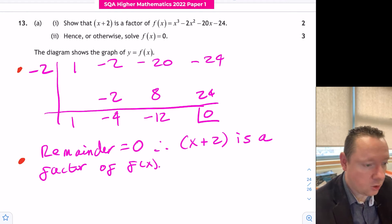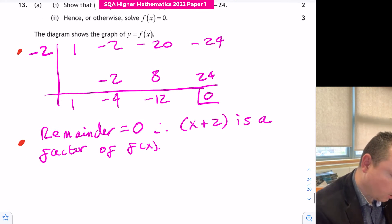Let's move on to part two: hence or otherwise solve f of x equals zero. This is where the power of synthetic division comes in. If you've already done synthetic for part A, you already know this. If you haven't, you're going to have to divide through. Let's assume we're doing it this way.